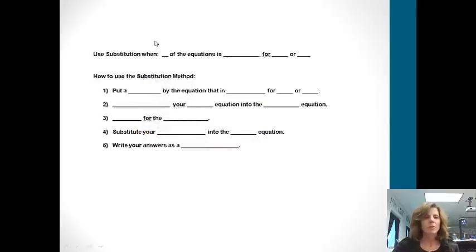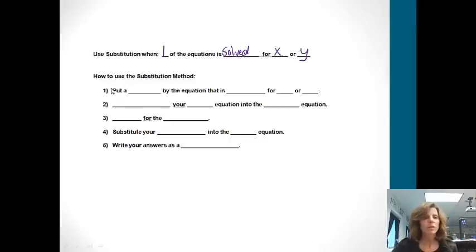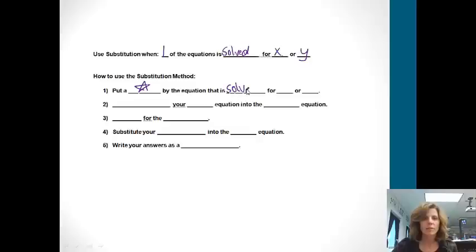The place when we will use substitution is when one of the equations is solved for x or y. So if it says y equals — like it's ready to graph — then we can go ahead and use substitution. The first thing is, I like to put a star by the equation that is solved for x or y.